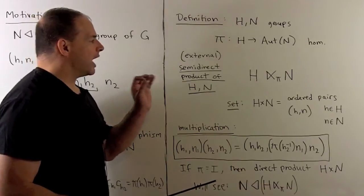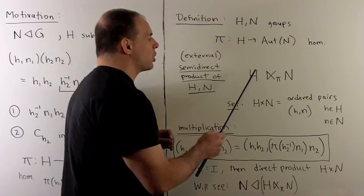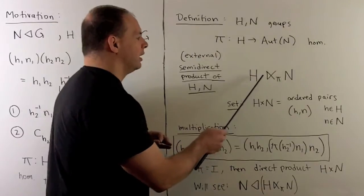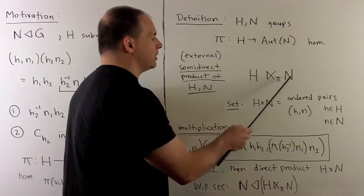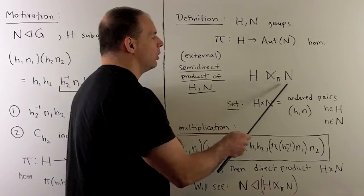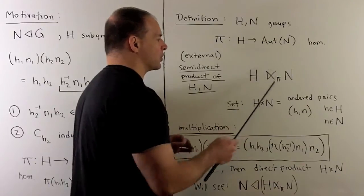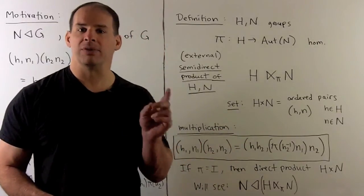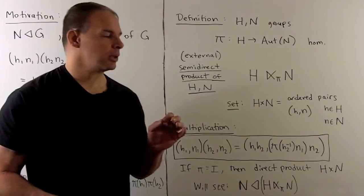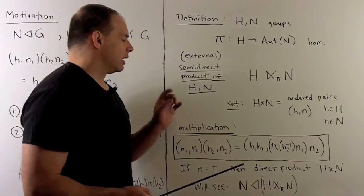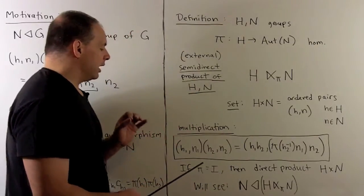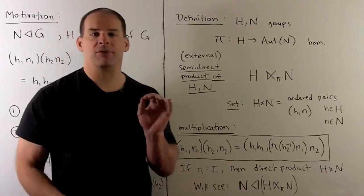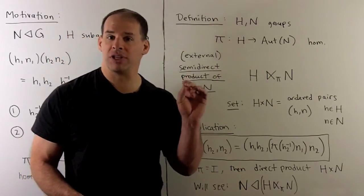For notation, I write this close to what we would have for a direct product. The triangle is going to point to the normal subgroup, and we have a subscript by our homomorphism. So if we use different homomorphisms, we can get different groups. Also note, if our pi is the identity map, then we just have the direct product. So this is a generalization.